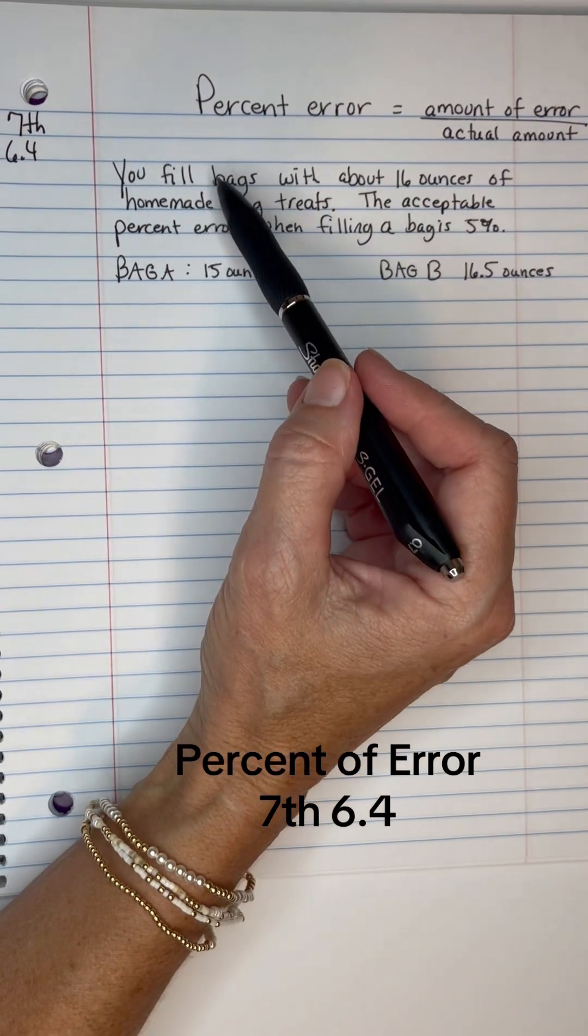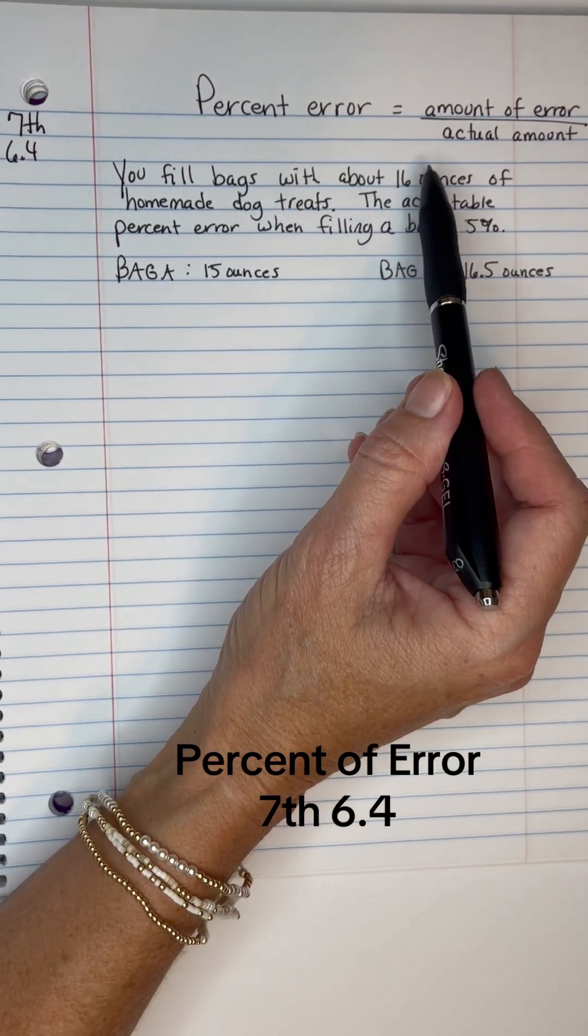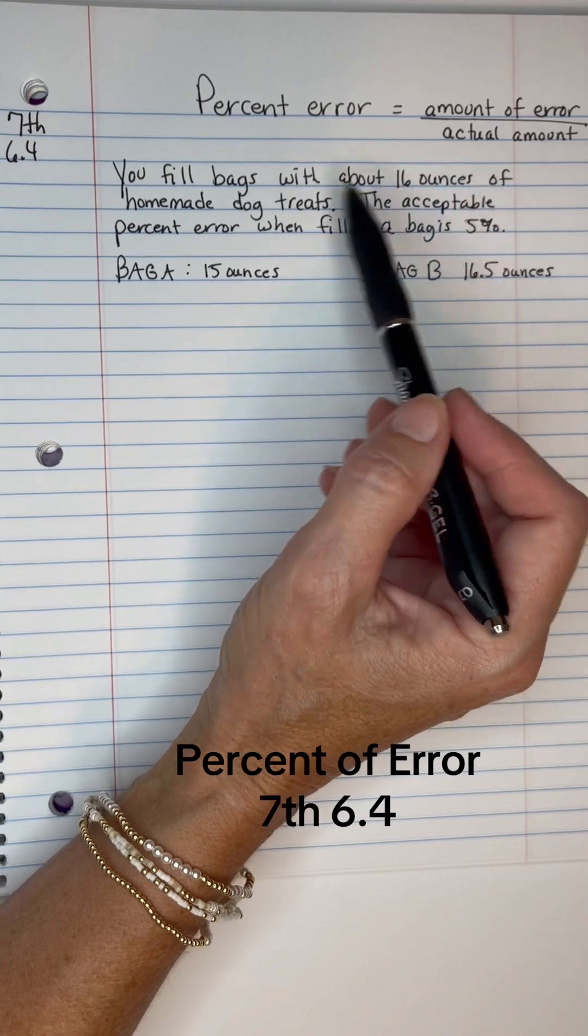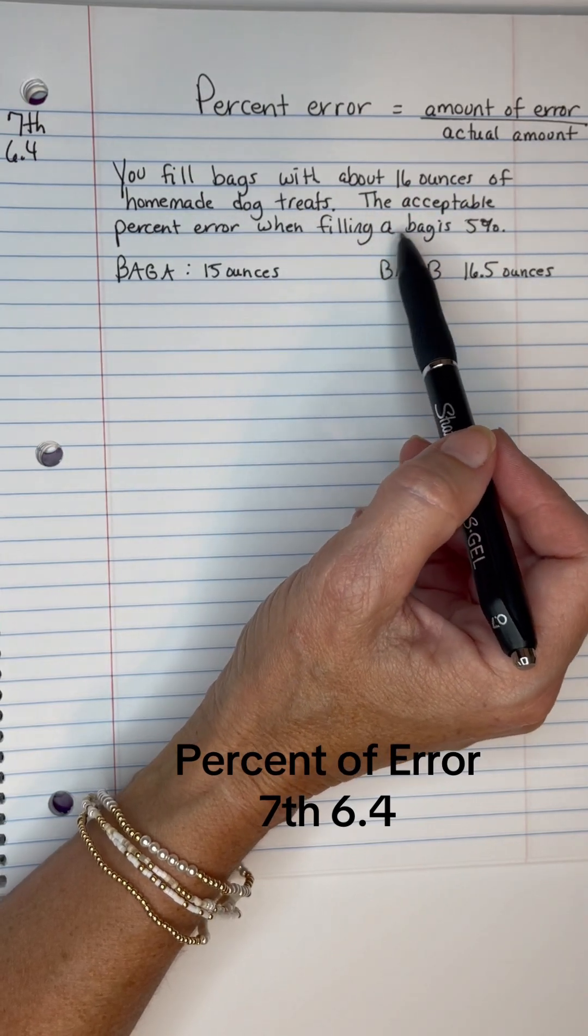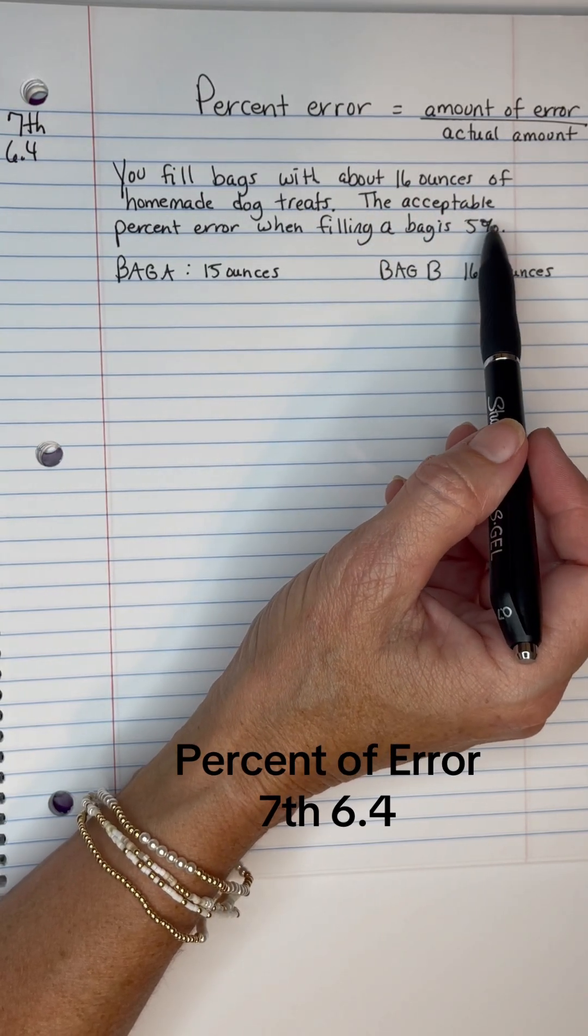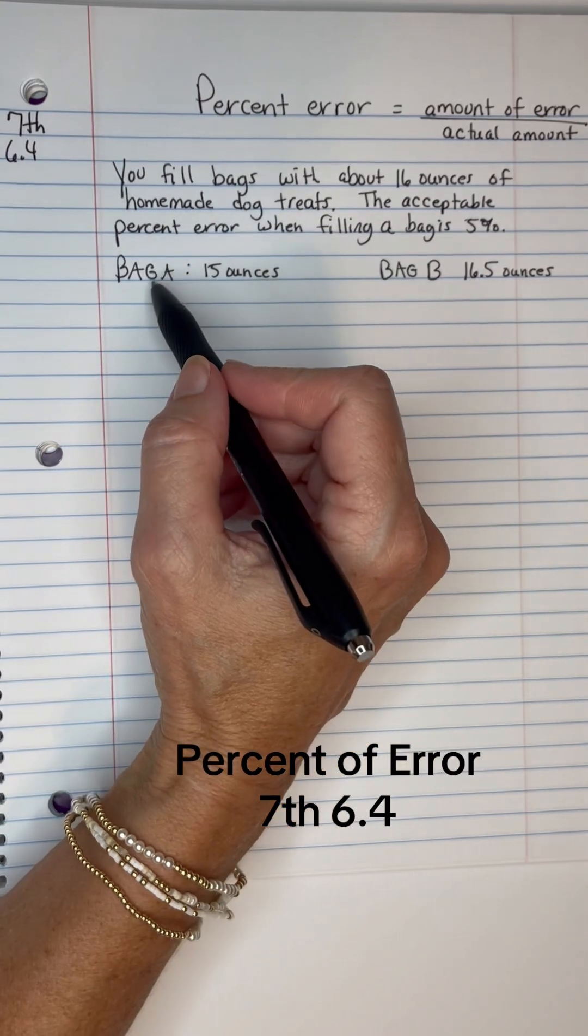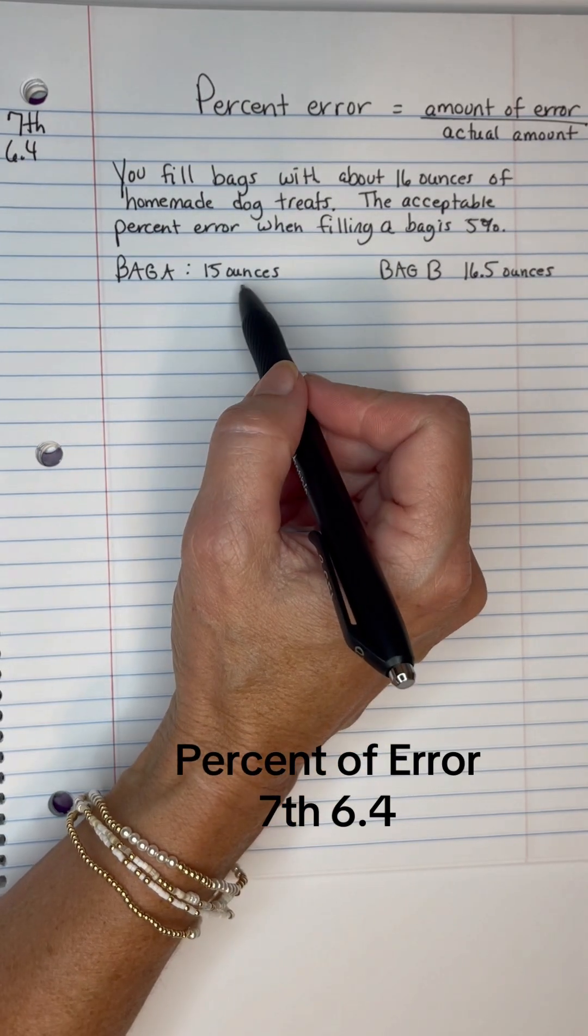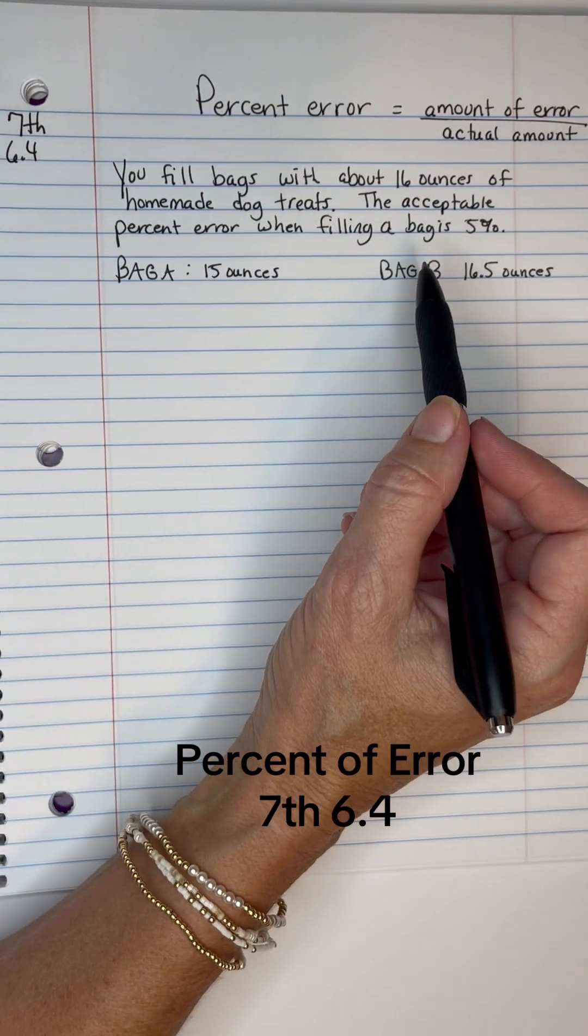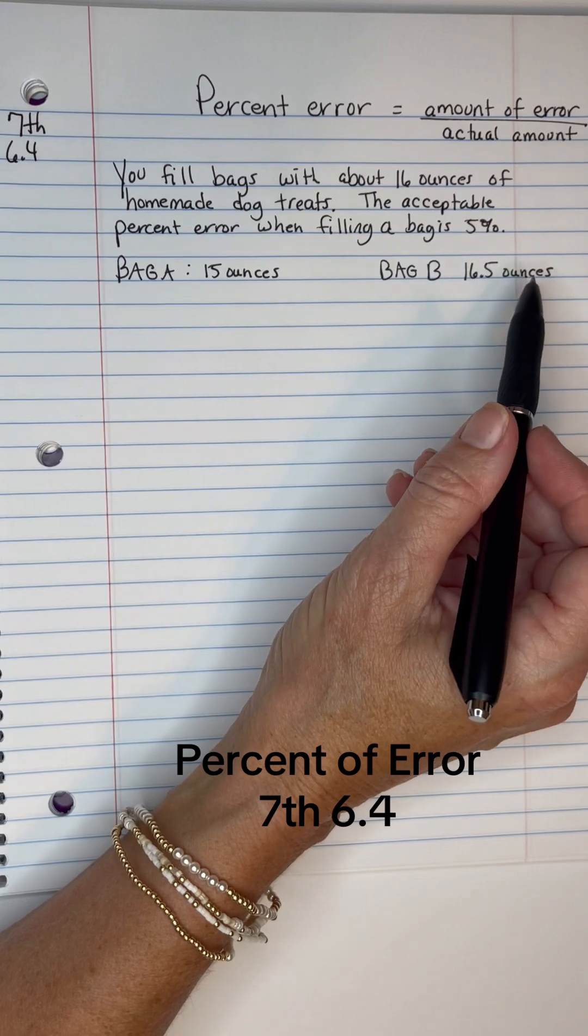Let's say you fill bags with about 16 ounces of homemade dog treats. The acceptable percent error when filling a bag is 5%. We're going to fill bag A and it's going to end up with 15, and we're going to fill bag B with 16 and a half ounce.